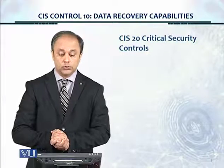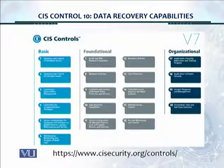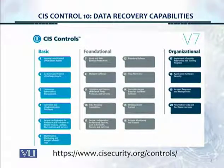Welcome. In this module, we'll talk about Center for Internet Security, CIS Top 20 Critical Security Controls and Control 10 Data Recovery Capabilities. It's such an important control. This is the layout for the CIS controls to the Top 20 Critical Security Controls. The URL is shown on the bottom of the screen. And we're talking about Control 10 Data Recovery Capabilities.